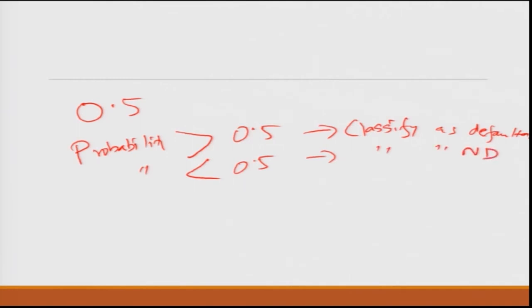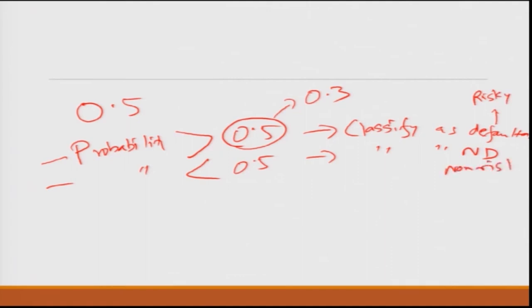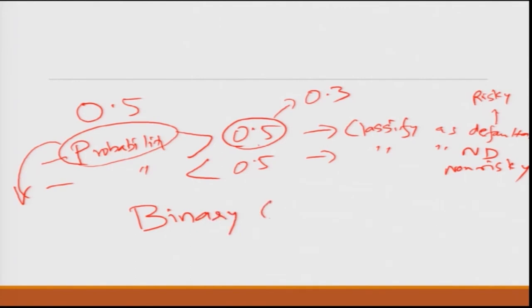If you want to be conservative, you can play around with this cutoff — say 0.3 — so anybody above 0.3 is considered risky. Depending on your risk tolerance, you can use a 10-point scale instead of a simple defaulter/non-defaulter classification. You can also directly use the probability figure and take decisions on the portfolio. This is how logistic regression classification is used for binary classification.